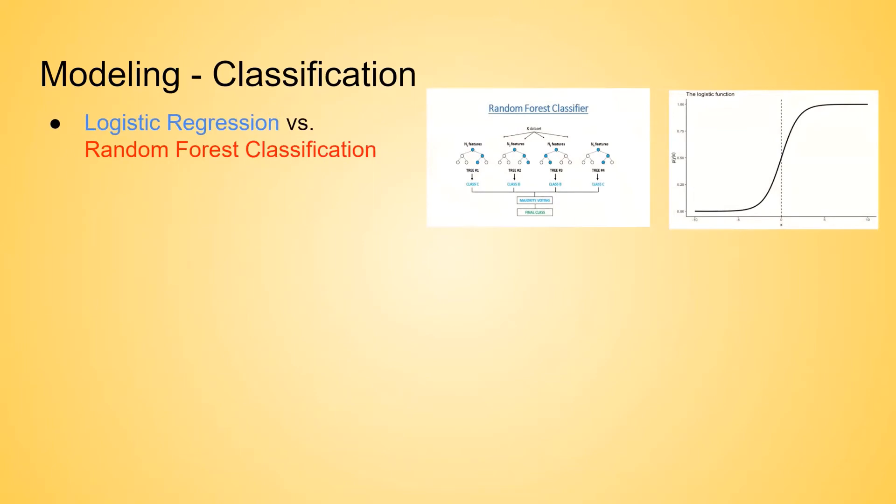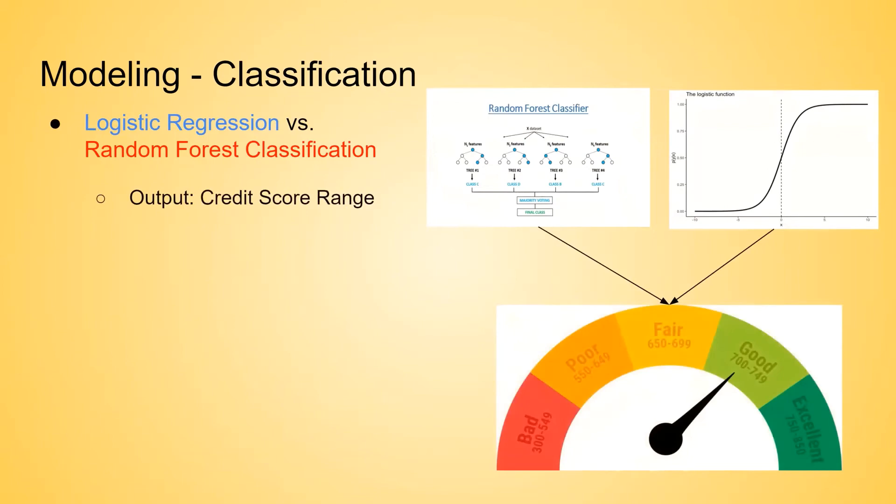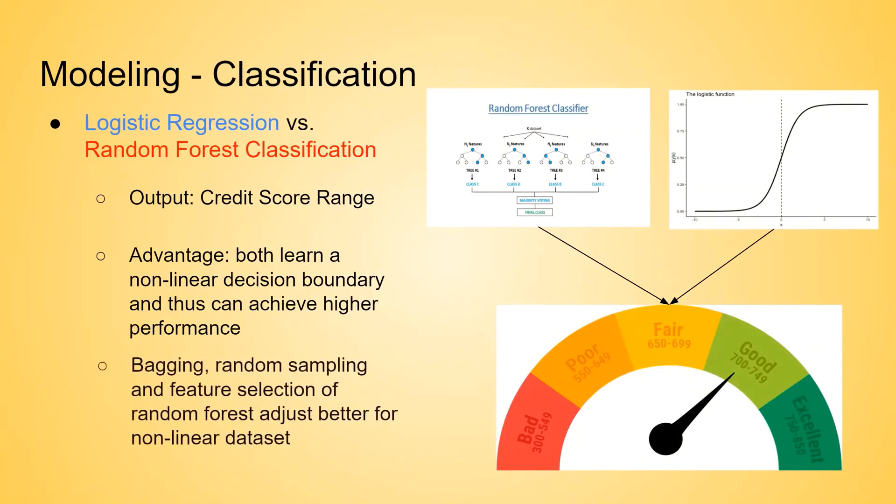The next type of model we are building is a classification model. Here, we chose to build a logistic regression model and random forest classification model. The output for this type of model will be a credit score range instead of a single number. The reason we chose logistic algorithm and random forest algorithm is because they both can learn a non-linear decision boundary and thus can achieve higher performance, such as higher accuracy score, precision score, and recall score. And also, bagging, random sampling, and feature selection of random forest address better for non-linear datasets.